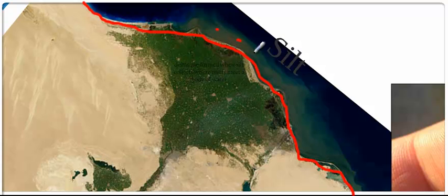We can actually see evidence of this silt being carried right here along the coast. The Nile River is depositing the silt into the Mediterranean Sea, and it's being carried by sea currents here.